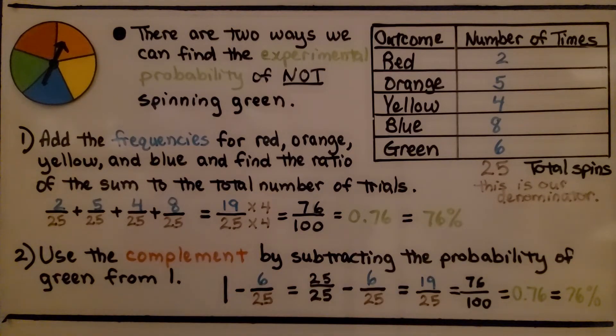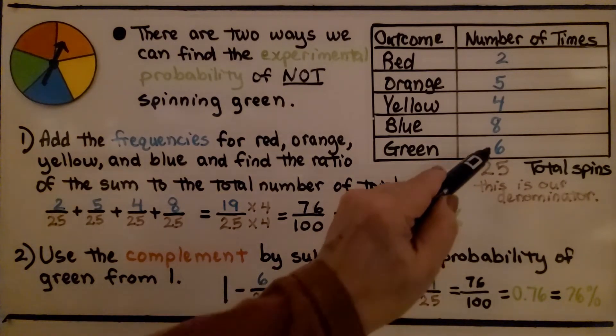That would be not green. We didn't include the green. The second way is to use the complement of the event by subtracting the probability of green from one, because that would be one hundred percent, wouldn't it?